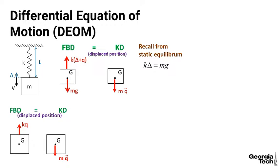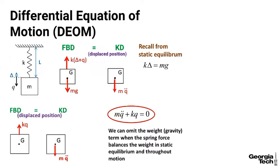If we draw the free body diagram equals kinetic diagram in the displaced position from the static equilibrium position, we can always leave out the spring force in static equilibrium and the weight, as long as the spring force balances the weight throughout motion.